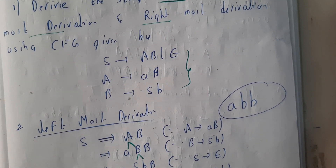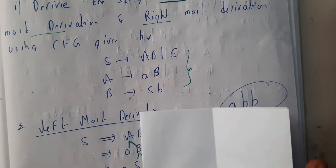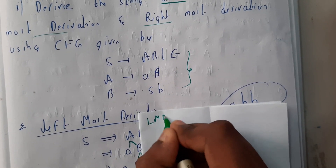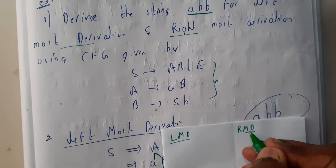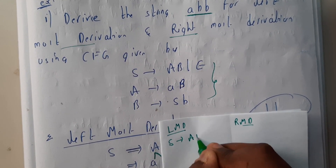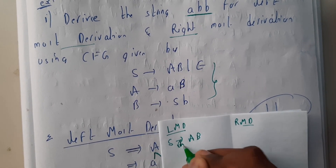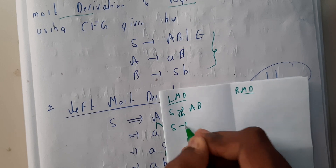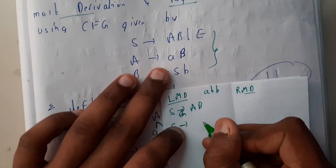So 'abb' is our goal. I'll be doing the leftmost derivation on this side and rightmost derivation on the other side. We start with S. S tends to AB. For leftmost derivation, you can write 'LM' like that — writing it is your wish, it's okay either way.